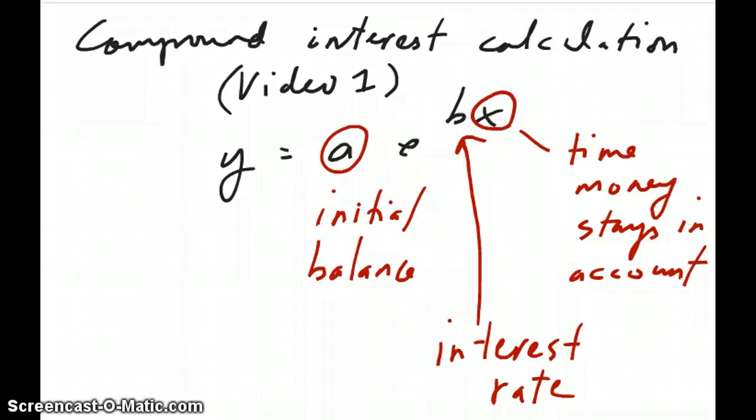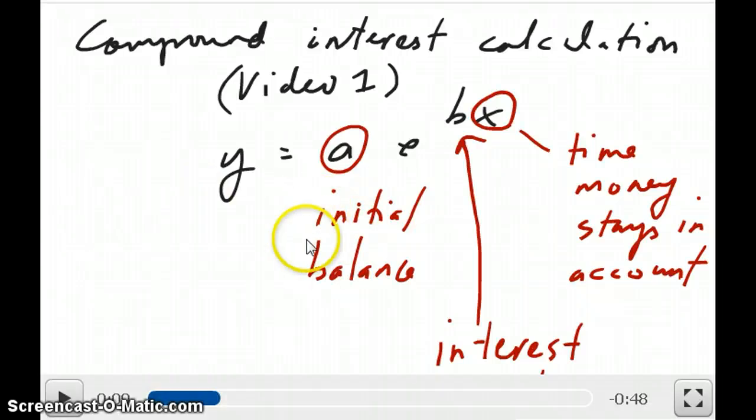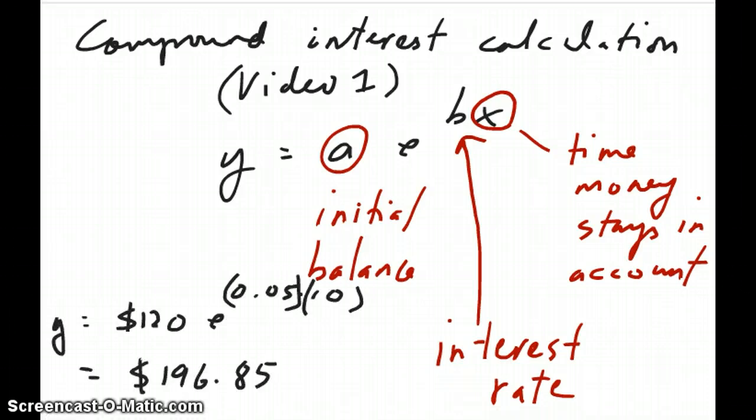Let's discuss an example we talked about in a prior video, which is the compound interest calculation of a savings account. Remember we talked about this in video one. You can calculate the final balance of a savings account if you have a certain interest rate and you put that money in for a certain number of years, starting with a particular initial balance. That function is the exponential function y equals a times e to the power of bx, where b is the interest rate and x is the time. At the bottom left of the screen, you see those are the calculations we did. Those were the numbers we started with: 12% interest in 10 years.